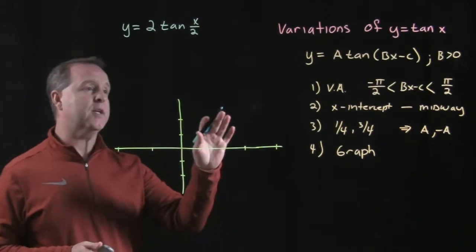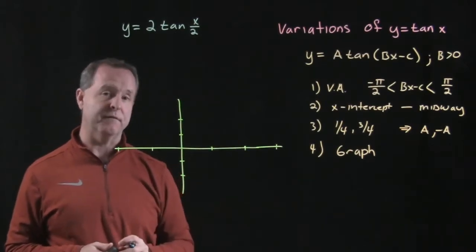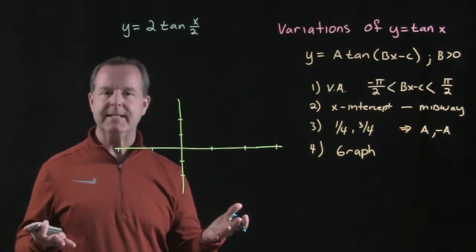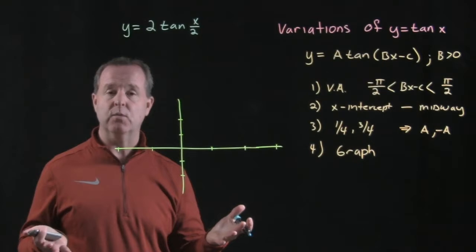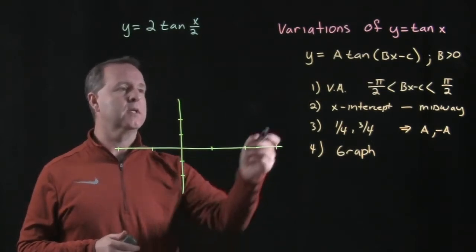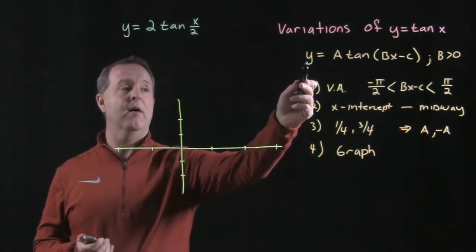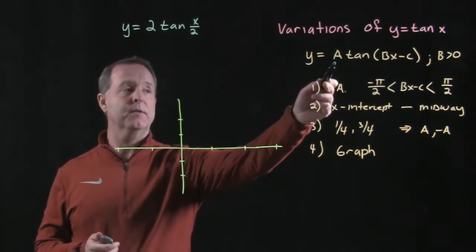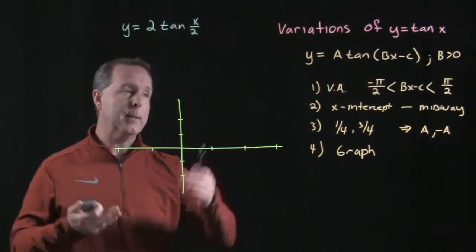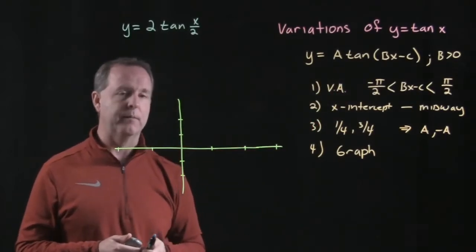Let's make sense of how we graph a variation of a tangent function. The basic tangent function with all the bells and whistles we're looking at has y equals a times the tangent of bx minus c, where b is greater than zero.